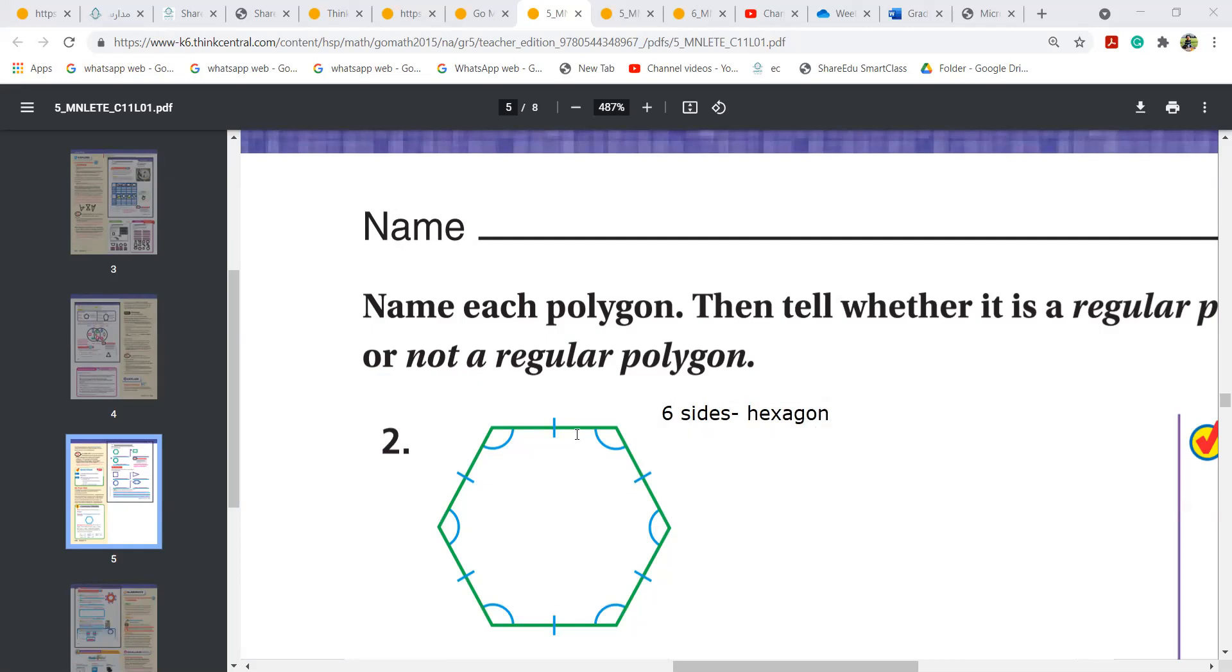Now, all are equal sides. That's why, and all are equal angles. When all are same sides, same length and same angle, it is called as congruent. So you have to know this word girls. From today, you need to know this word congruent.